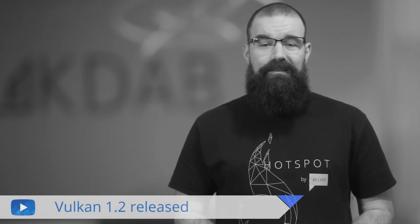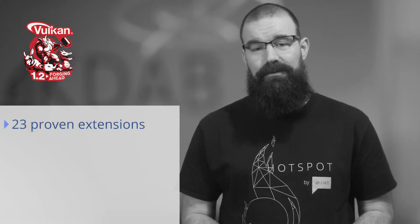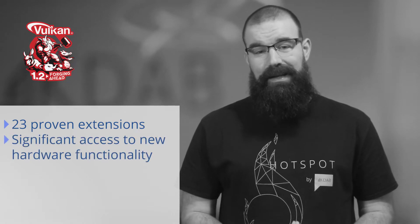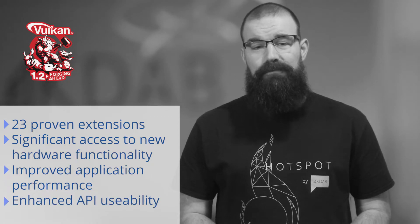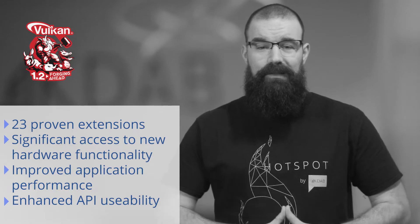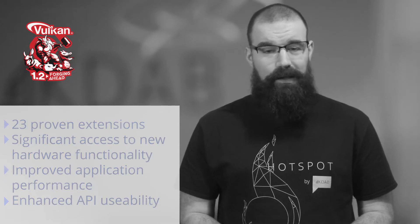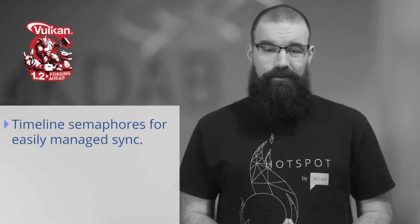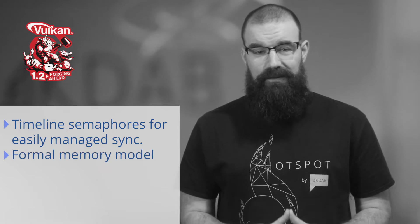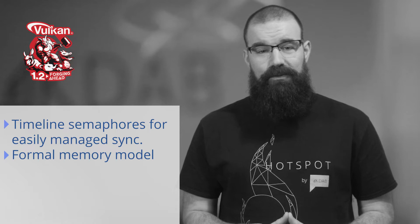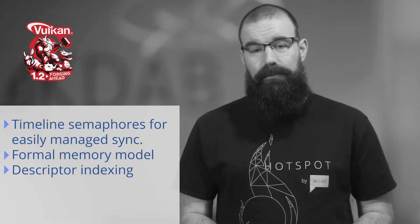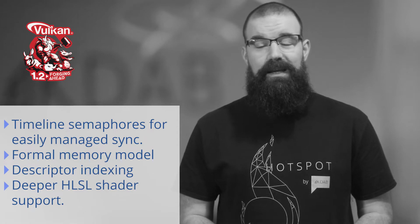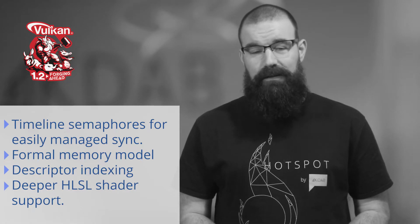A new version of the graphics and compute API Vulkan has been released. Vulkan 1.2 integrates 23 proven extensions into the core Vulkan API, bringing significant access to new hardware functionality, improved application performance, and enhanced API usability. Many Vulkan 1.2 features were requested by developers to meet critical needs in their engines and applications, including timeline semaphores for easily managed synchronization, a formal memory model to precisely define the semantics of synchronization and memory operations in different threads, descriptor indexing to enable reuse of descriptor layouts by multiple shaders, deeper support for shaders written in HLSL, and more. For further details, check the link below the video.